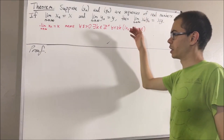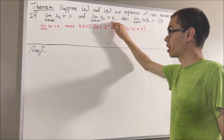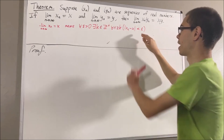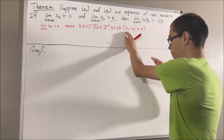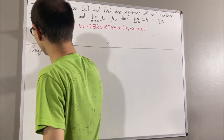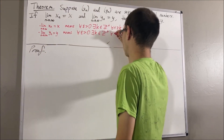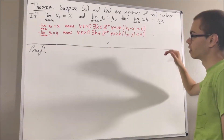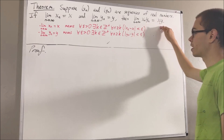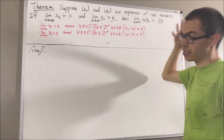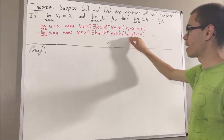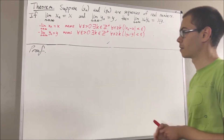And similarly, to say that yn converges to y means the same thing — it's just instead we have the absolute value of yn minus y is less than epsilon. And finally, to say that xn yn converges to xy means the same thing, it's just instead we have absolute value of xn yn minus xy is less than epsilon.